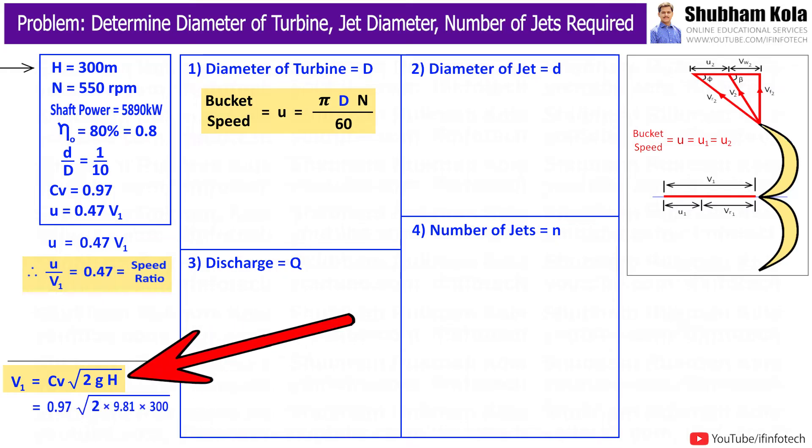The value of H, that is available net head, is provided in given data, and the numerical value for acceleration due to gravity g is 9.81 meter per second square.